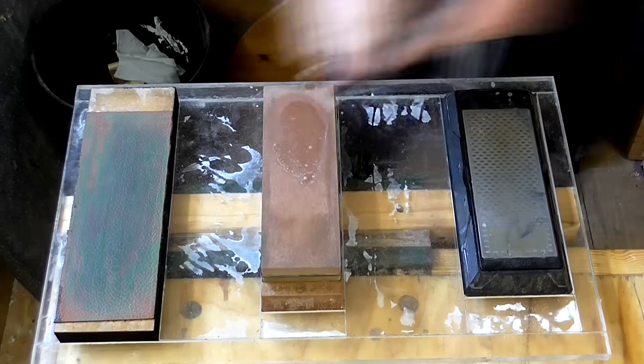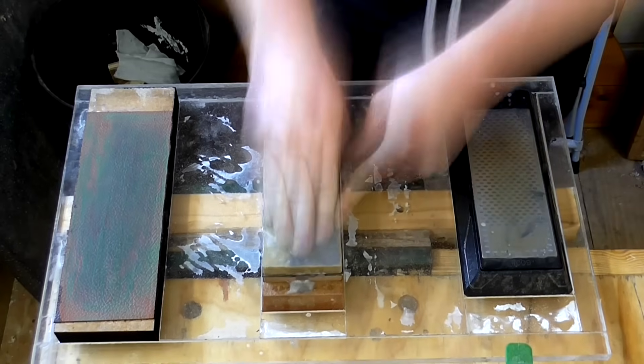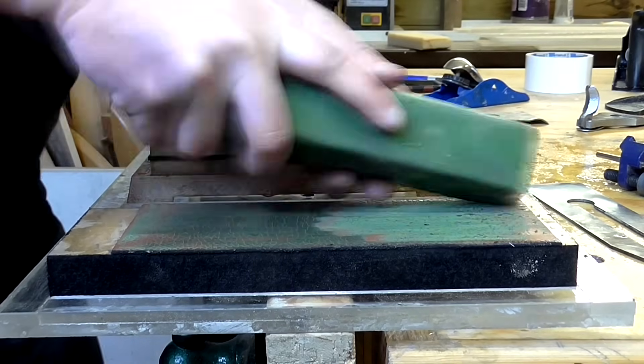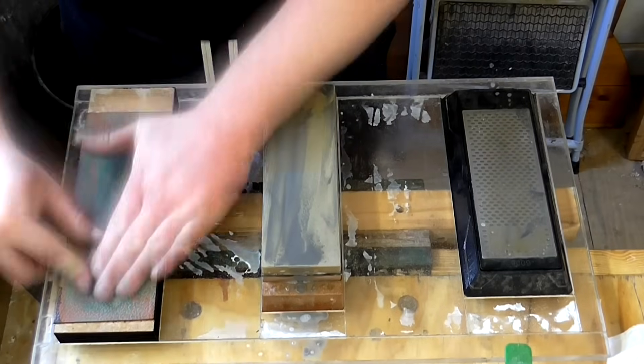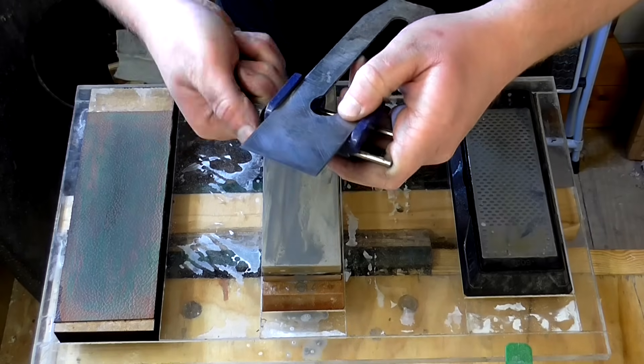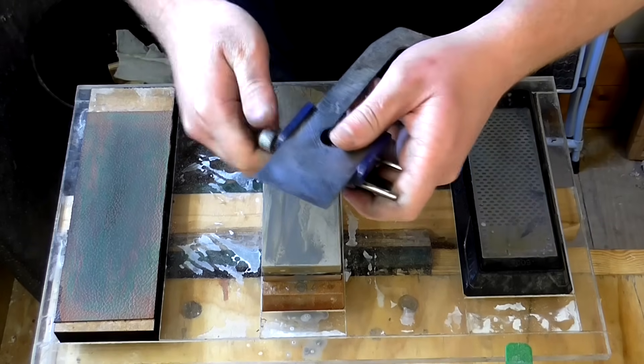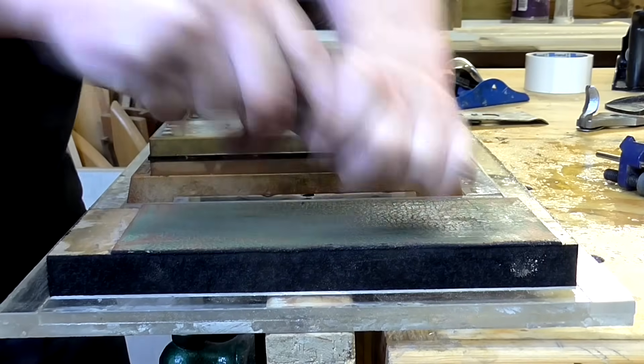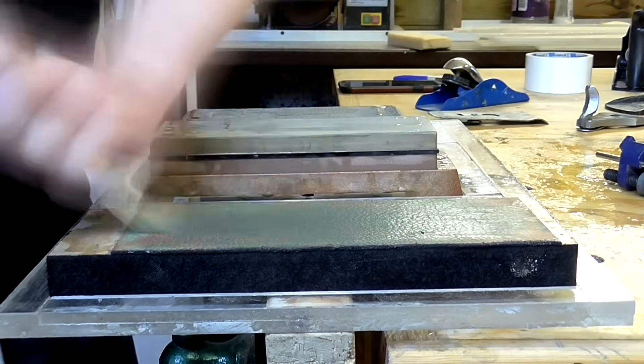I lubricate the stones with some soapy water and work my way up from 360 grit to 6000 grit and then hone on a piece of leather charged with some green polishing compound. Then I fit the cutting iron into a honing guide and sharpen through the grits once more. Then I remove the cutting iron from the honing guide and polish the cutting edge by hand on the leather strop.